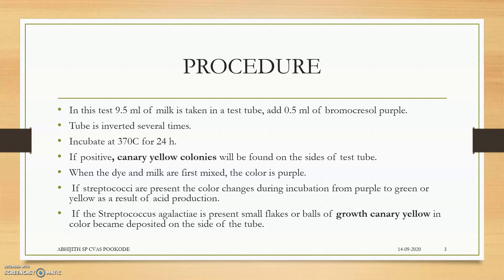The procedure is as follows: 9.5 ml of milk is taken in a test tube. Then add 0.5 ml of bromocresol purple. The tube is inverted several times and is aerated. Incubate at 37 degrees centigrade for 24 hours.